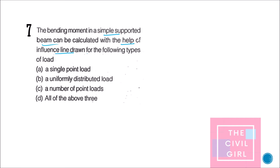Next question: the bending moment in a simply supported beam can be calculated using an influence line diagram for which types of load? For a simply supported beam you can use a point load, a distributed load (UDL), or any number of point loads. So all three options are valid — the answer is all of the above.